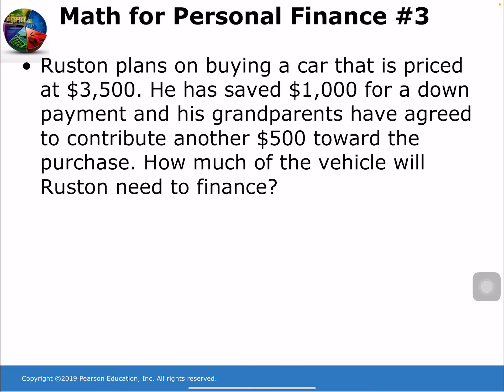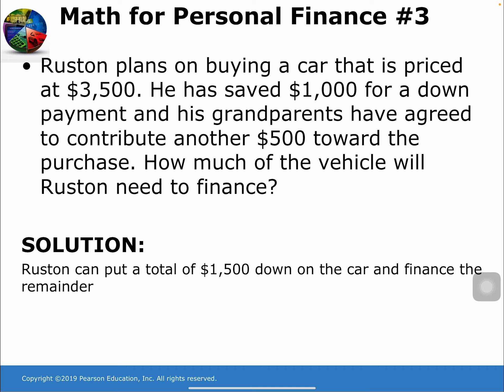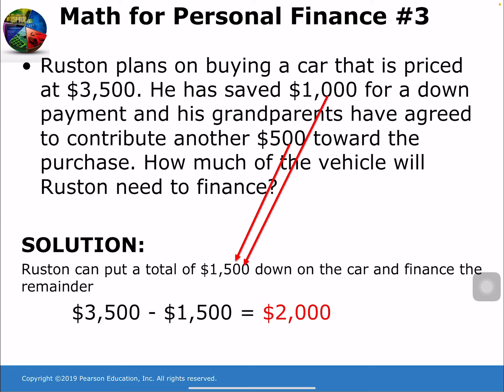Math problem: Rustin plans to buy a car priced at $3,500. He has saved $1,000 for a down payment and his grandparents have agreed to contribute another $500 toward the purchase. How much will he need to finance? Rustin can put down a total of $1,500 — the $1,000 he saved plus the $500 from his grandparents. So he will need to finance $2,000.